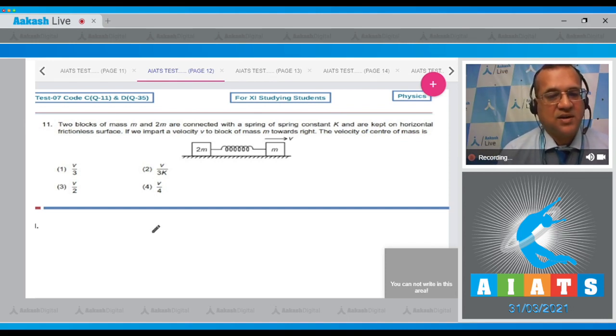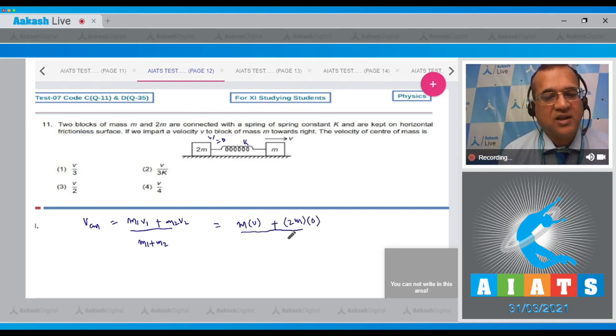Now dear students, we know that the formula of velocity of center of mass is equal to m1v1 plus m2v2 divided by m1 plus m2. This mass has velocity v and this mass has velocity 0. So m multiplied by v plus 2m multiplied by 0 divided by the mass m and 2m.